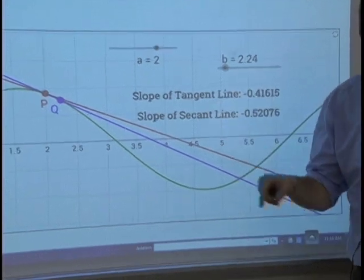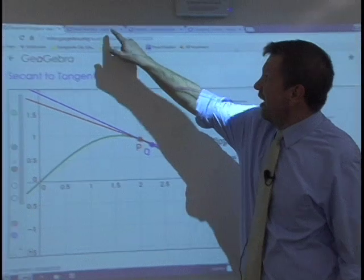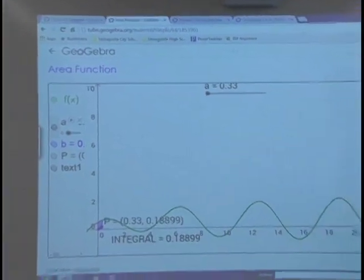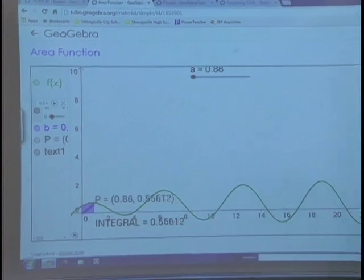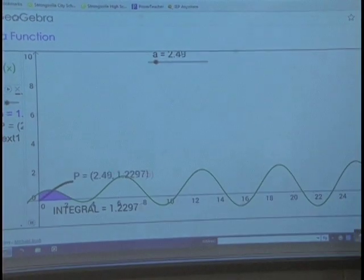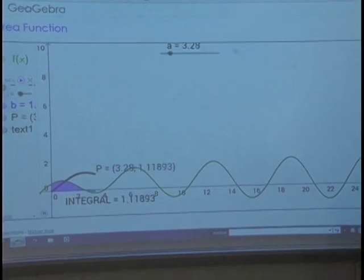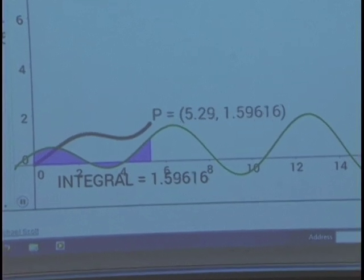Another type of calculus class we teach here at Strongsville is BC AP calculus. BC calculus is the equivalent of two semesters worth of college calculus. This is another example of a way that our technology is able to bring an abstract idea to life as the fundamental theorem of calculus is the link between calculus 1 and calculus 2 and students can see how an area function is produced.